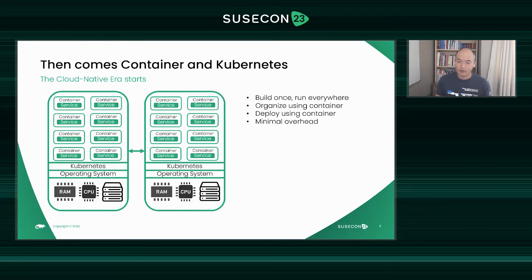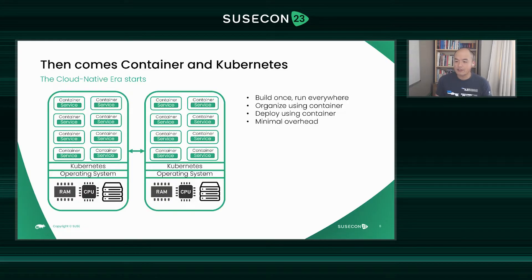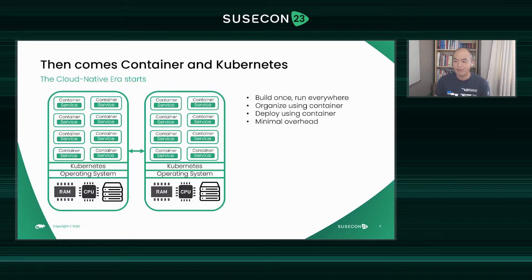It enables the build-once, run-everywhere scenario. The organization and deployments are all using containers, which is new but not so new. It really enables agility — much more agile compared to shipping a VM image every time. Container images are layered, you can easily add on top, just change the delta, and with overlay filesystem and caching mechanisms it's really efficient. And starting containers has minimal performance overhead because you're essentially running the same operating system — you're not creating another separate domain. The performance overhead is really small.